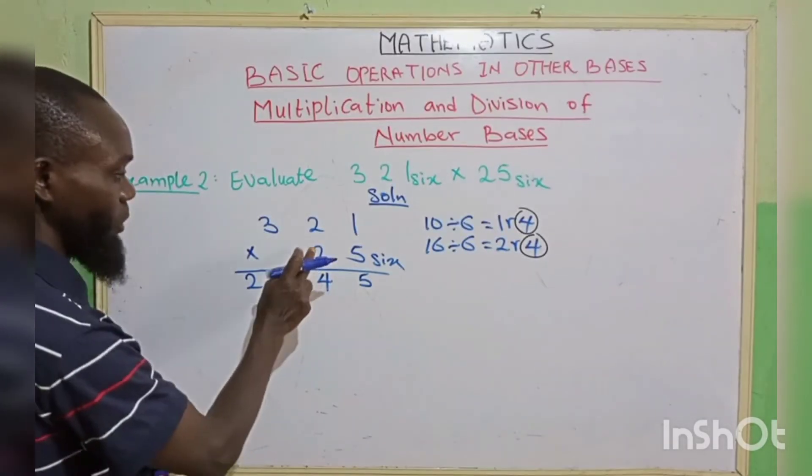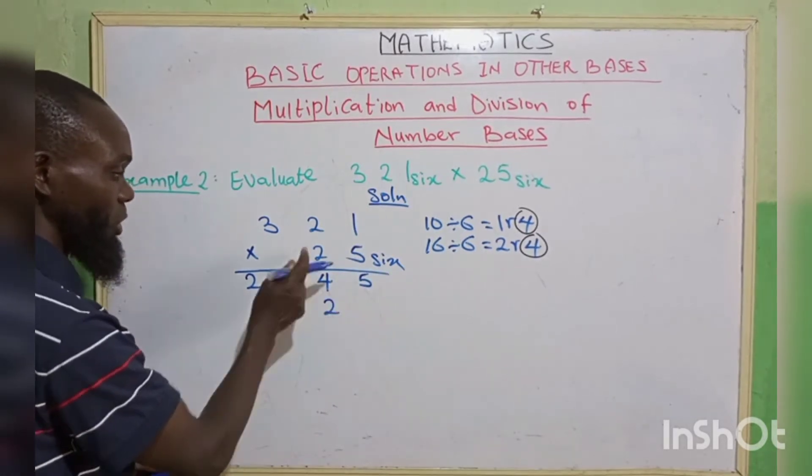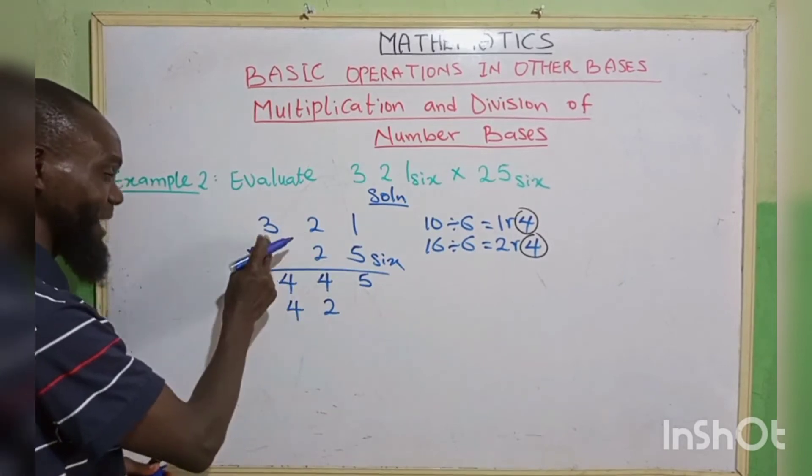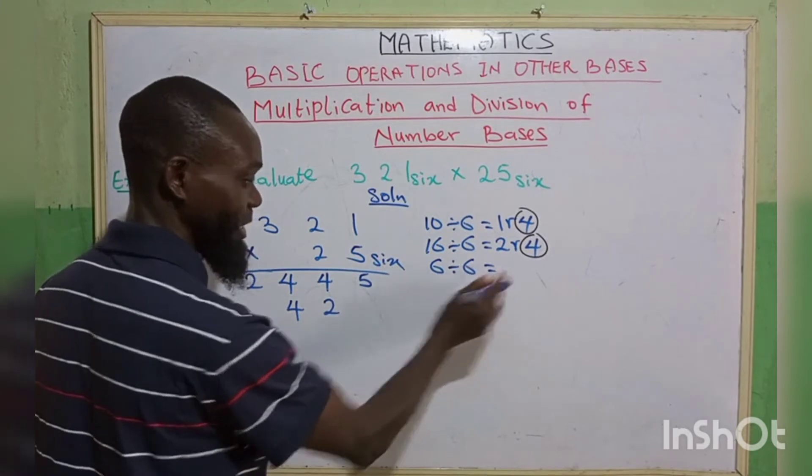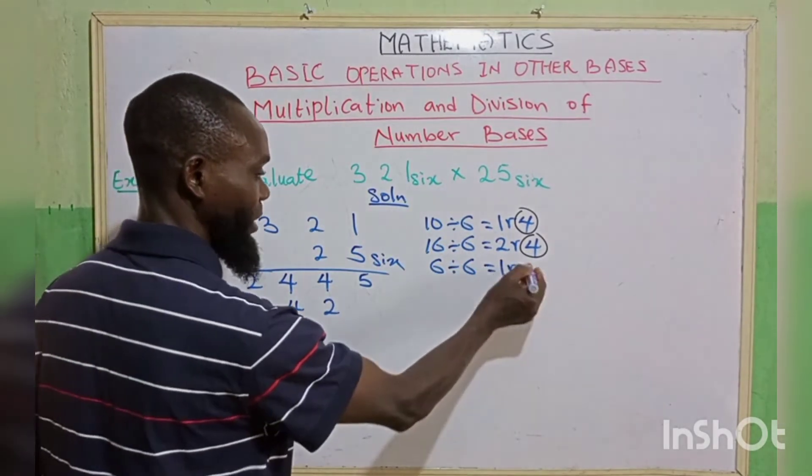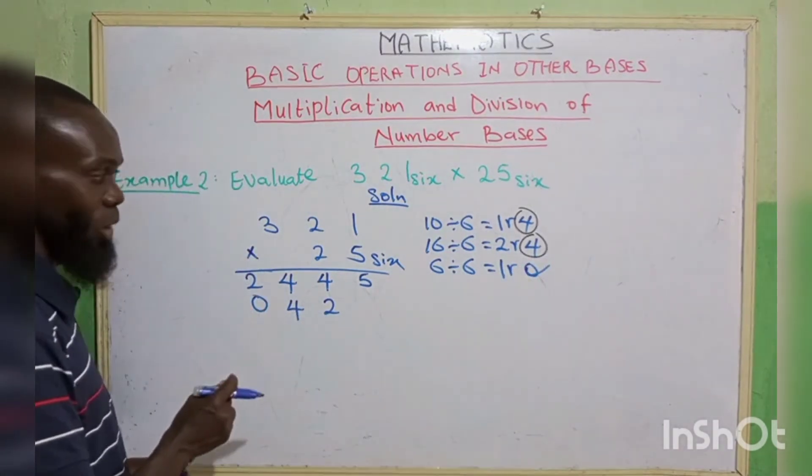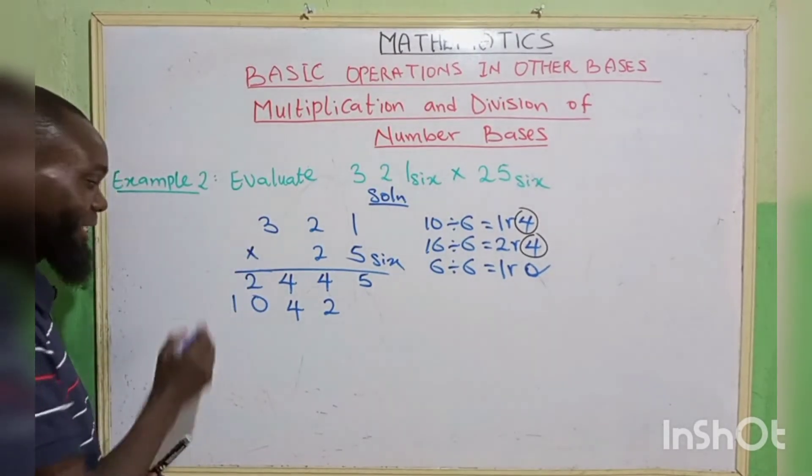Now we want to multiply by 2. 2 times 1, 2. It's not up to 6, we write 2. 2 times 2, 4. It's not up to 6, we write 4. 2 times 3, that is 6. It's up to 6, divided by that 6 which is the base. 6 goes in 6, we have 1 remainder 0. So we write our remainder 0, we carry that 1. There's no more number here to multiply, you put your 1 down. The next stage is to add.